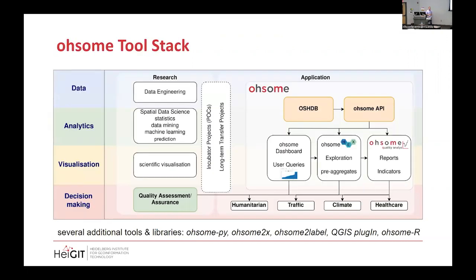What is awesome? Awesome is a platform that makes it easy to interact with the rich history of OpenStreetMap data. At its core, it's the OSHTB database, and built on top are different APIs and applications that make it easy and user-friendly to interact with the historical data.